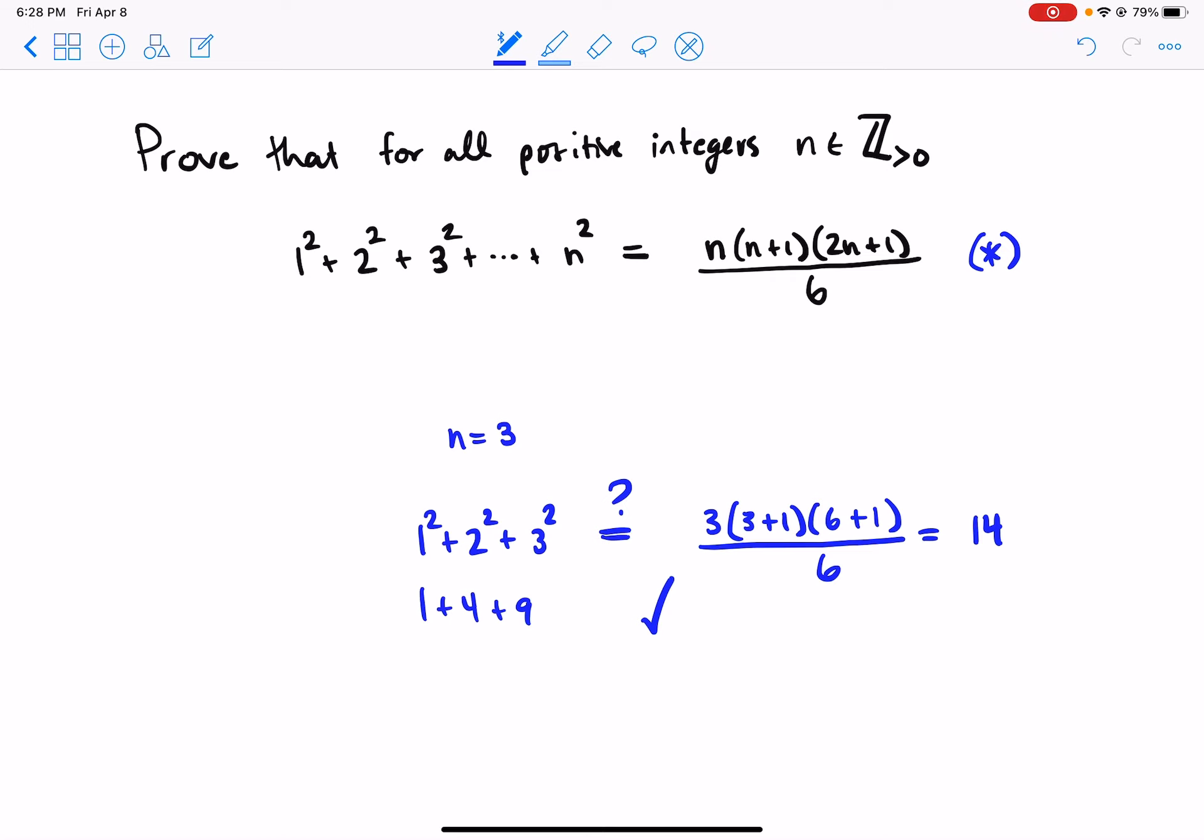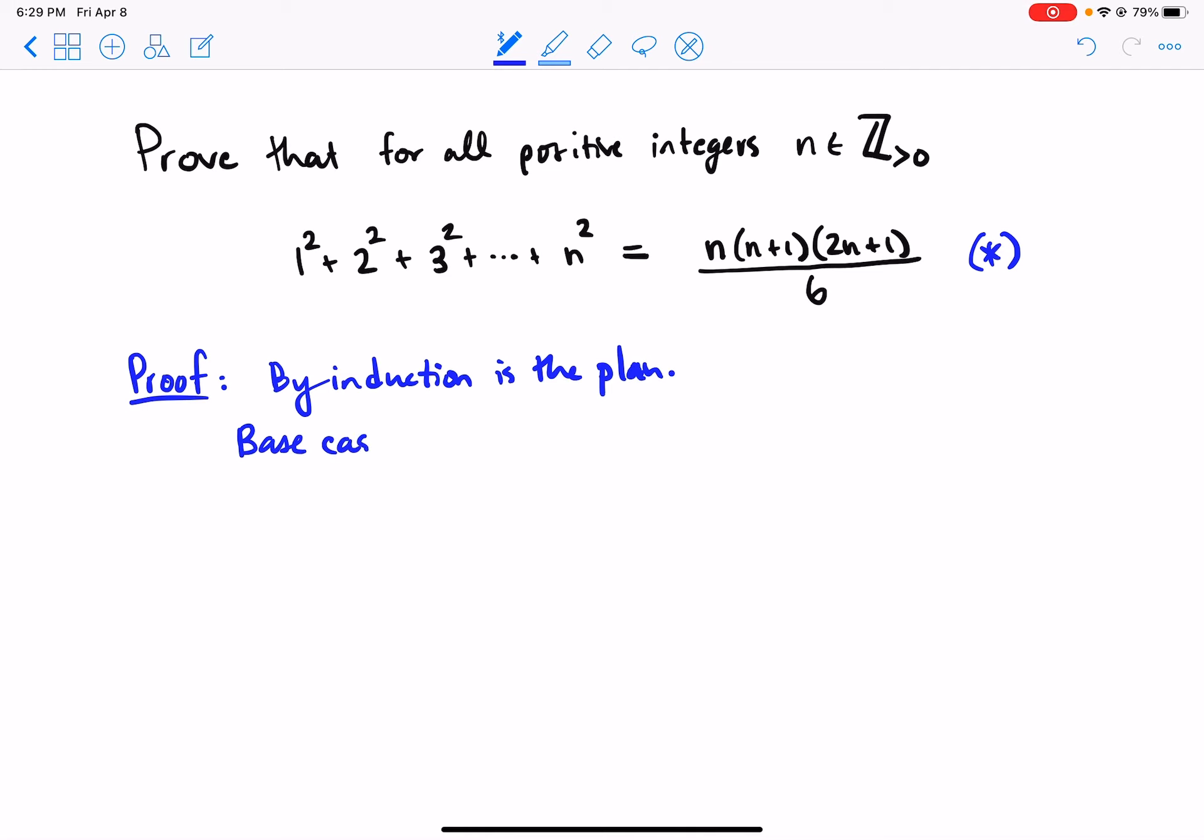Well, of course, you should experiment more. But let's just go ahead and prove it that this is true, even for n equals 1042. Okay, it's true for every single n. So proof by induction is the plan. Dear reader, I'm going to prove it by induction. So you know how that goes. Base case.